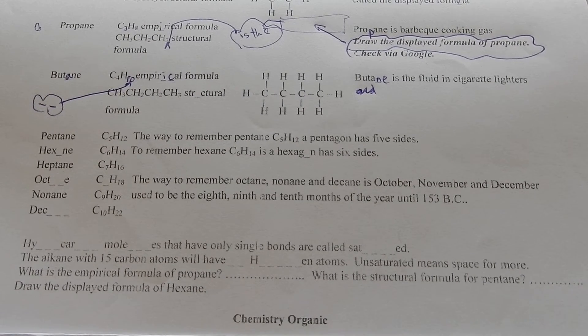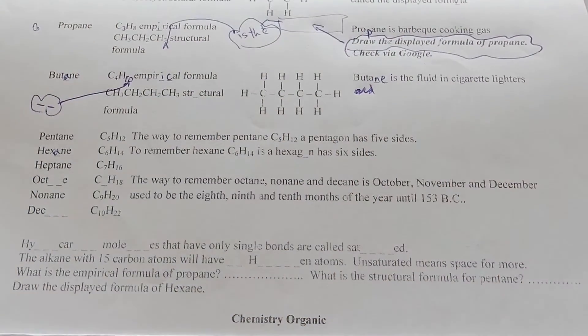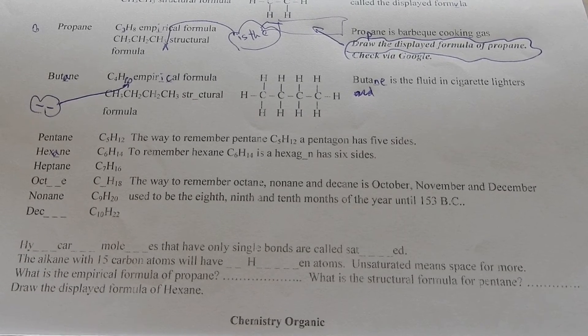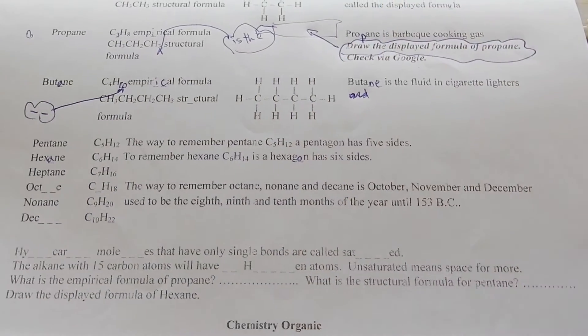Pentane, C5H12. The way to remember pentane is pentagon has five sides. Hexane, C6H14. To remember hexane, C6H14 is hexagon has six sides.